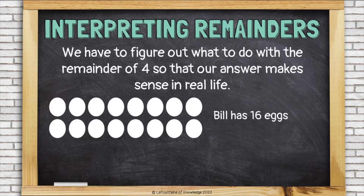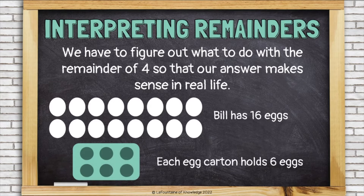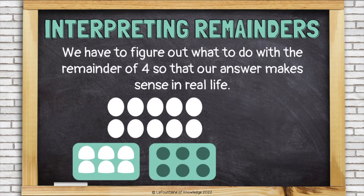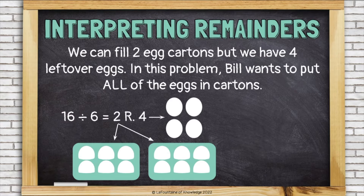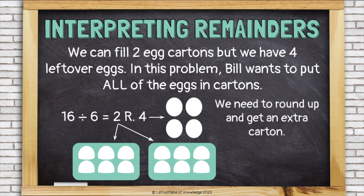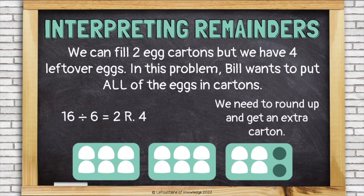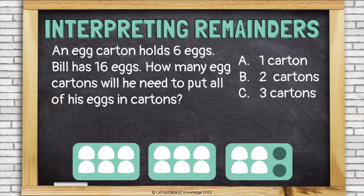Bill has 16 eggs. Each egg carton holds 6 eggs. So let's start putting some eggs into cartons. There's 1 carton, 2 cartons. There's my 2, and there's my remainder 4. We can fill 2 egg cartons, but we have 4 leftover eggs. In the problem though, Bill wants to put all of the eggs in cartons. We need to round up and get an extra carton. It's not going to be full, but we still need it to get all of the eggs into cartons. Bill will need 3 cartons to fit all 16 eggs.